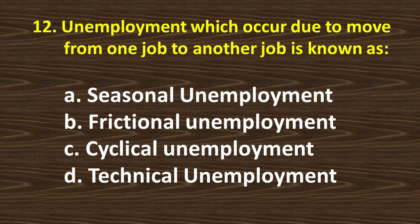Twelfth question: unemployment which occurs due to moving from one job to another job is known as — option B, frictional unemployment.